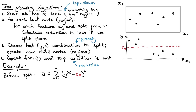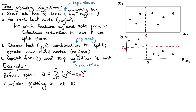Now let's consider what will happen if we split one of our features at a specific position. As an example, let's consider splitting X1 at some position S, and let's say for now that S is at a particular position. So we're considering: if we decided to split here, what would the situation be like?